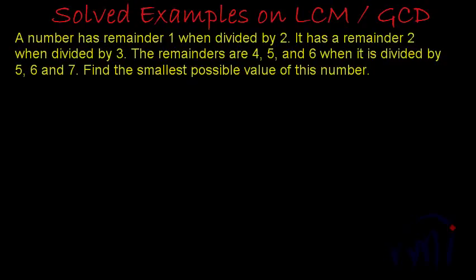We have one more problem based on LCM or GCD. The problem statement says a number has remainder 1 when divided by 2, remainder 2 when divided by 3, and remainders 4, 5, and 6 when it is divided by 5, 6, and 7. Find the smallest possible value for this number.